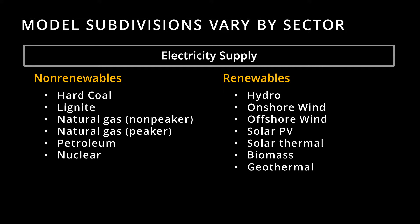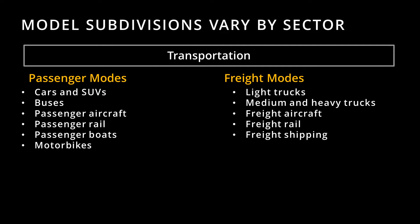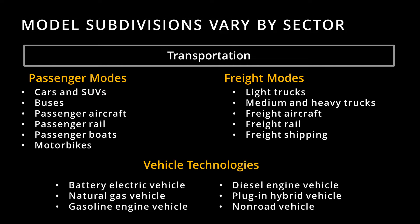The electricity sector is subdivided by electricity source. The model considers heat rates, capacity factors, and other properties of power plants. The transportation sector is divided up by vehicle type, including both passenger and freight modes. For example, there are passenger aircraft and freight aircraft, passenger rail and freight rail, and so forth. The on-road modes — meaning cars, buses, trucks, and motorbikes — are further subdivided by vehicle technology, such as electric vehicles, or vehicles with a gasoline or a diesel engine.